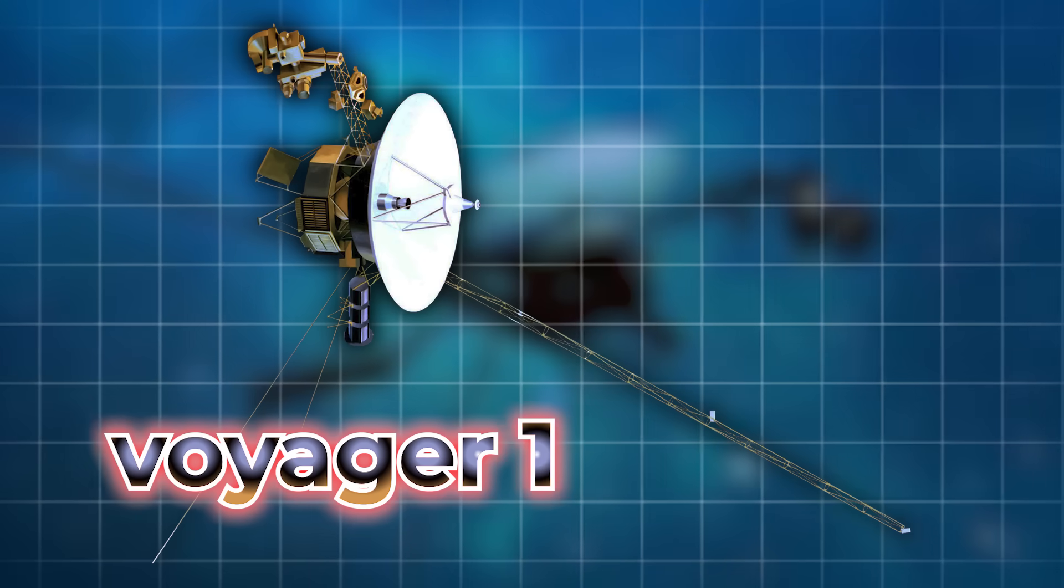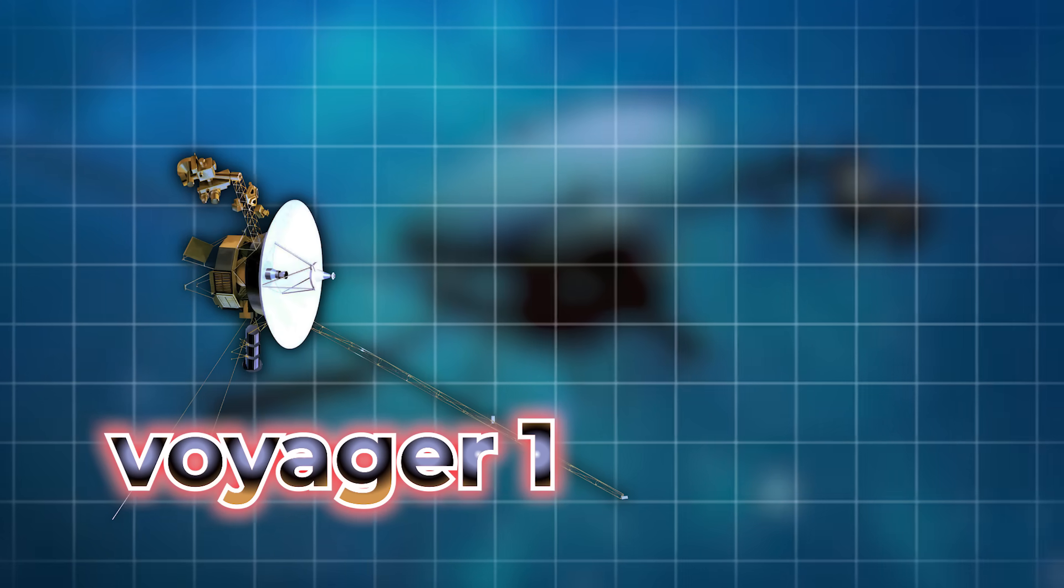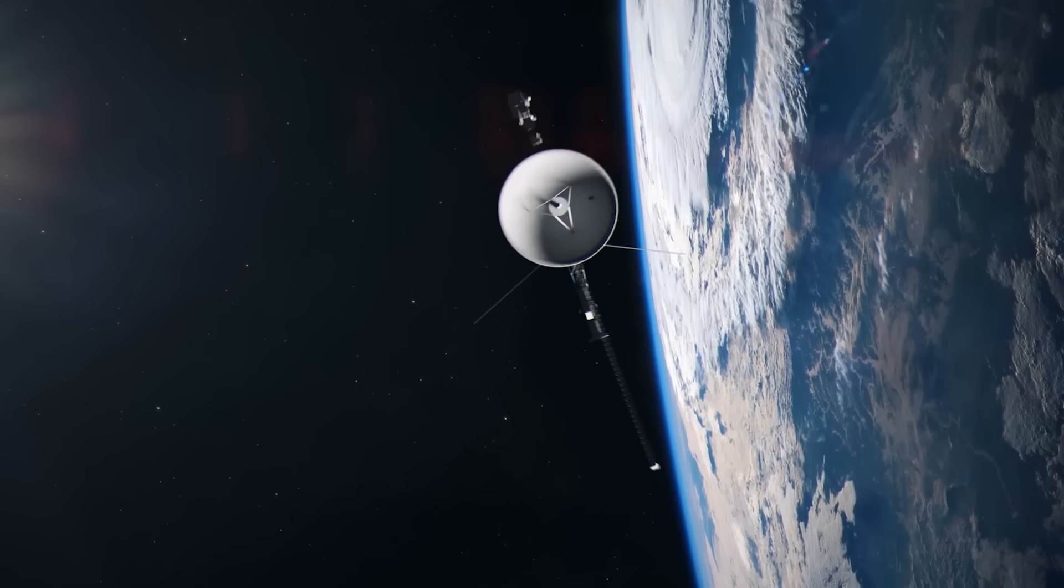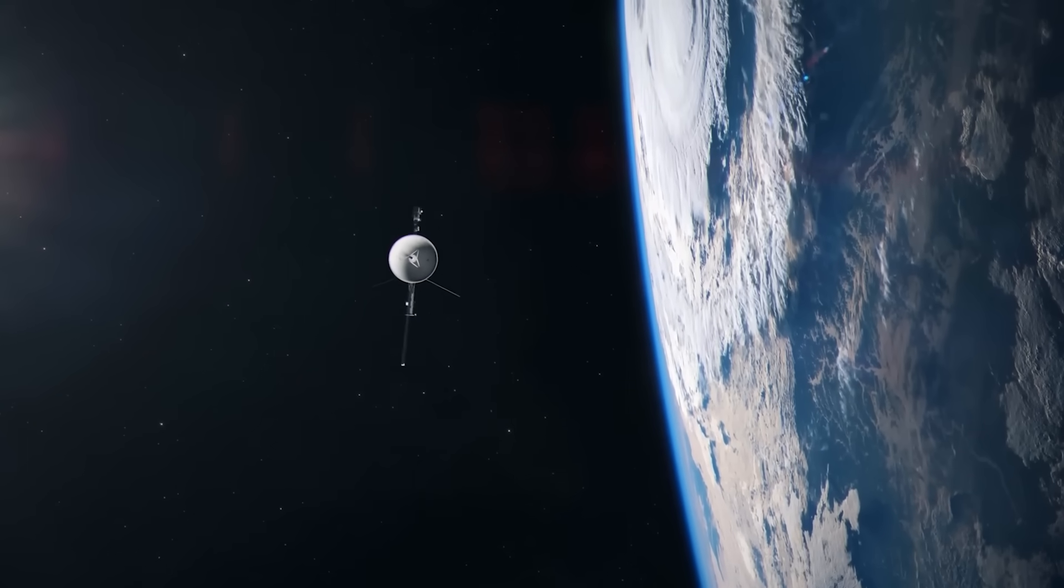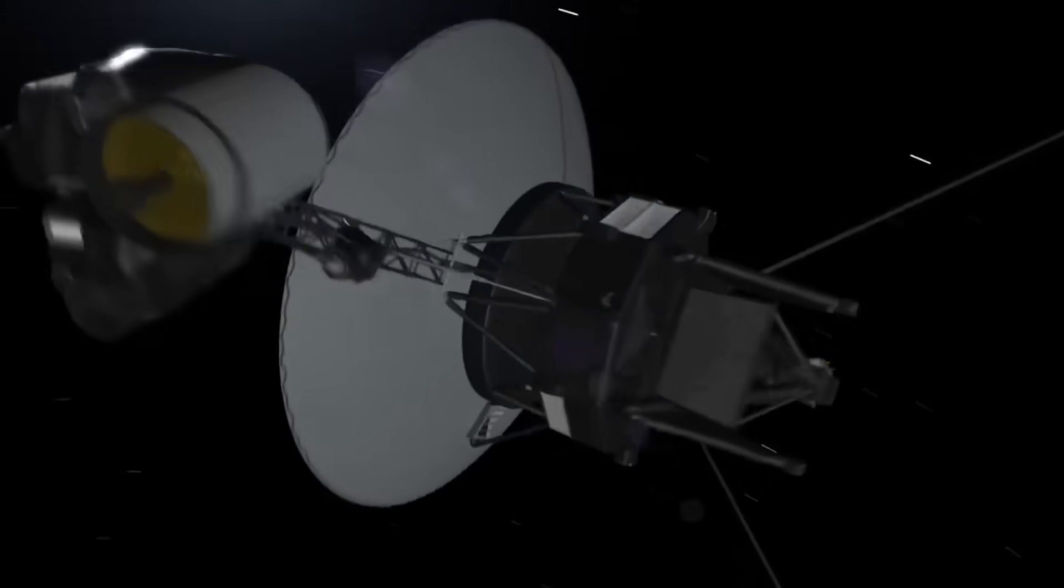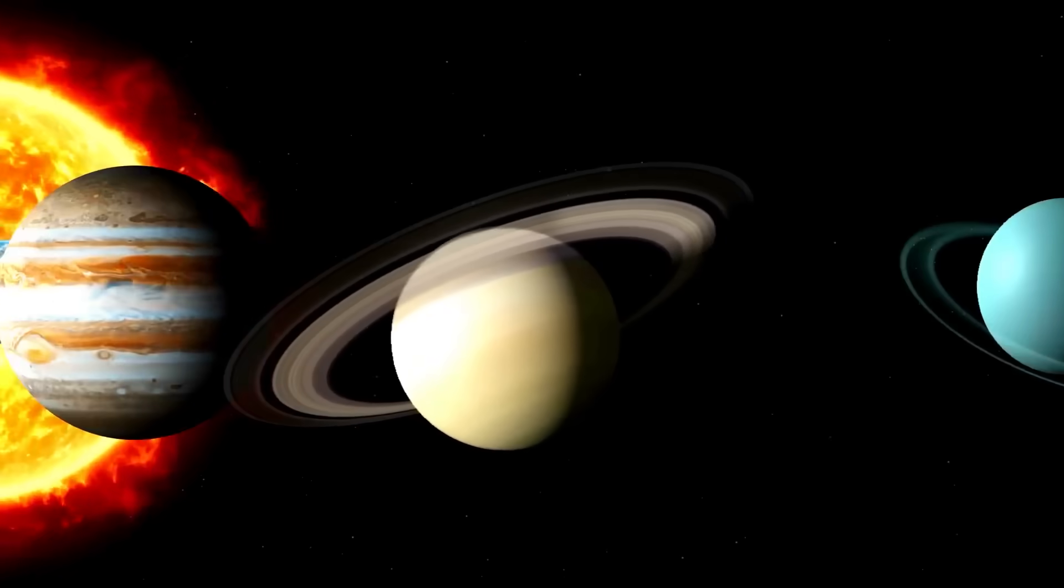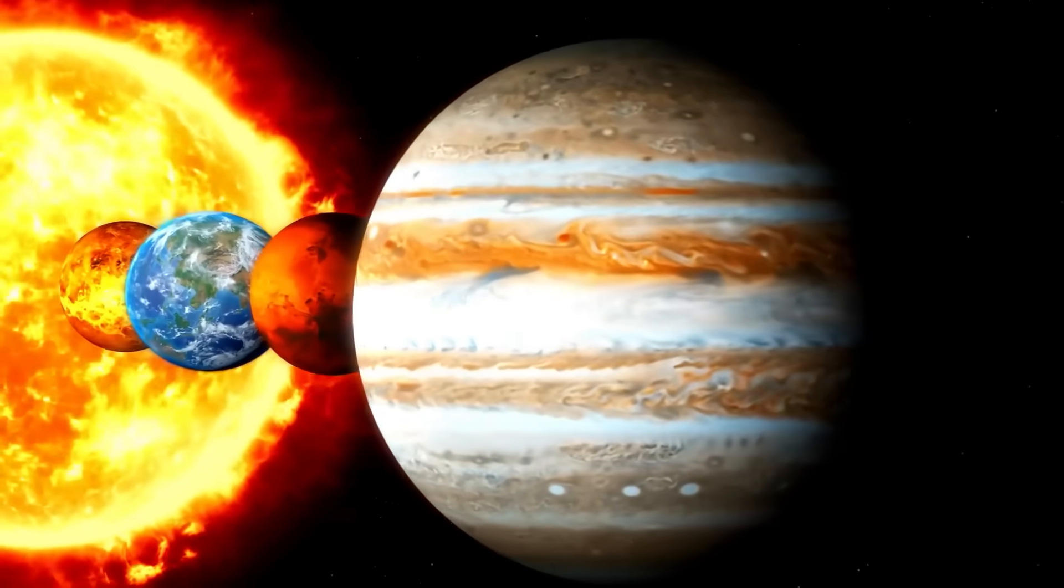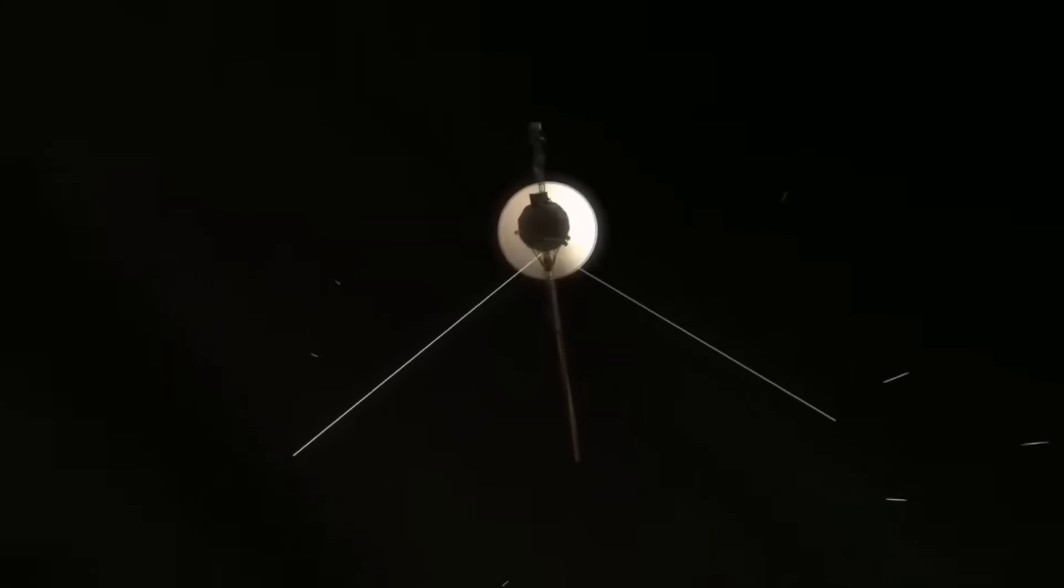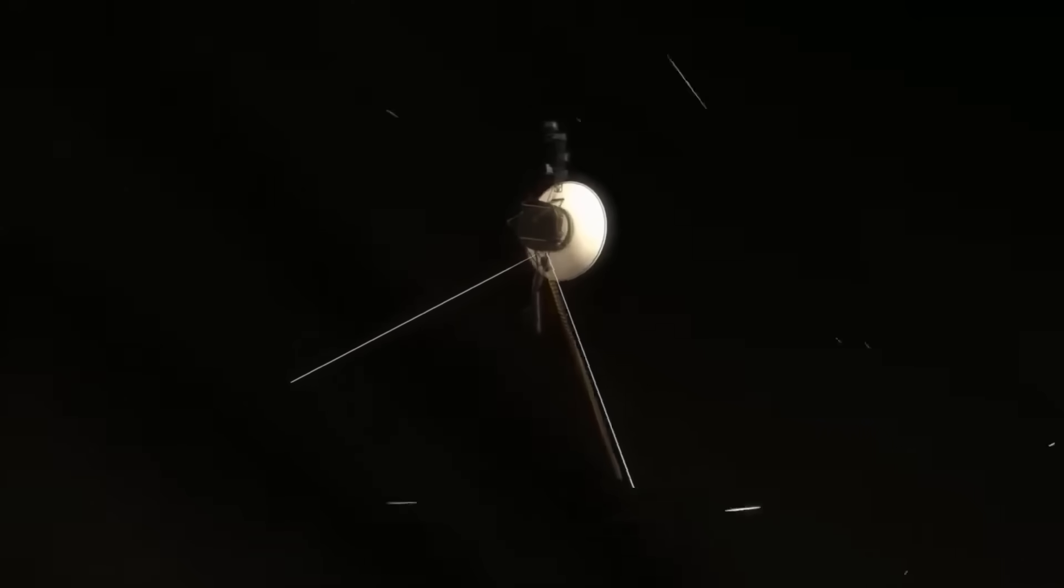NASA says its Voyager 1 probe, the most distant human-made object in the universe, is sending usable information to Earth. For decades, Voyager 1 has drifted farther from Earth than any human-made object in history, plunging deeper into the uncharted territories of interstellar space. Launched in 1977, it has long since passed the boundaries of our solar system, crossing the heliopause, the edge where the sun's influence wanes and the vastness of the galaxy begins. It now travels more than 15 billion miles from Earth, silently transmitting data across the darkness.